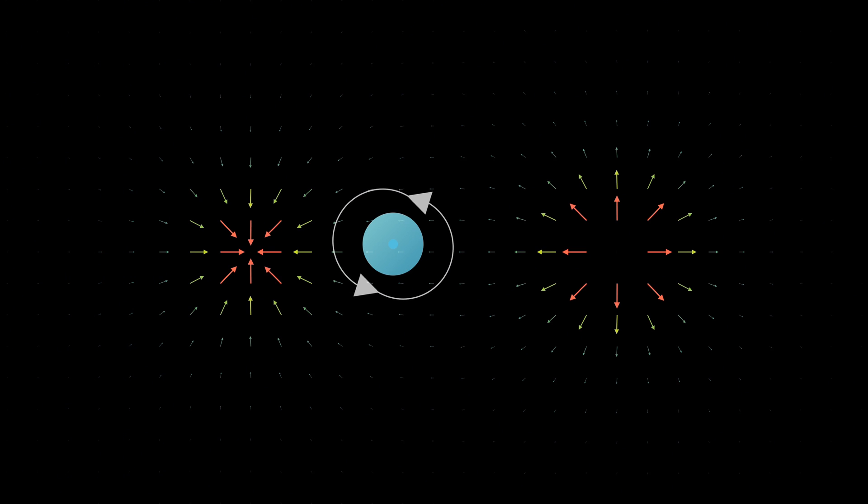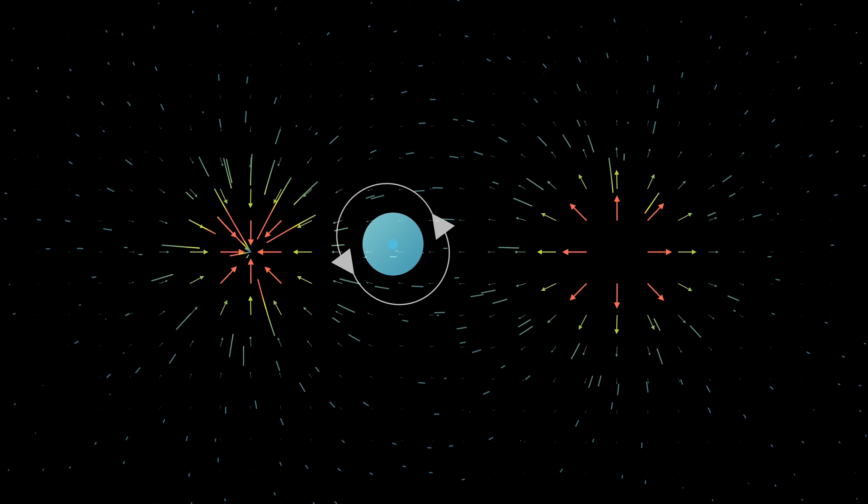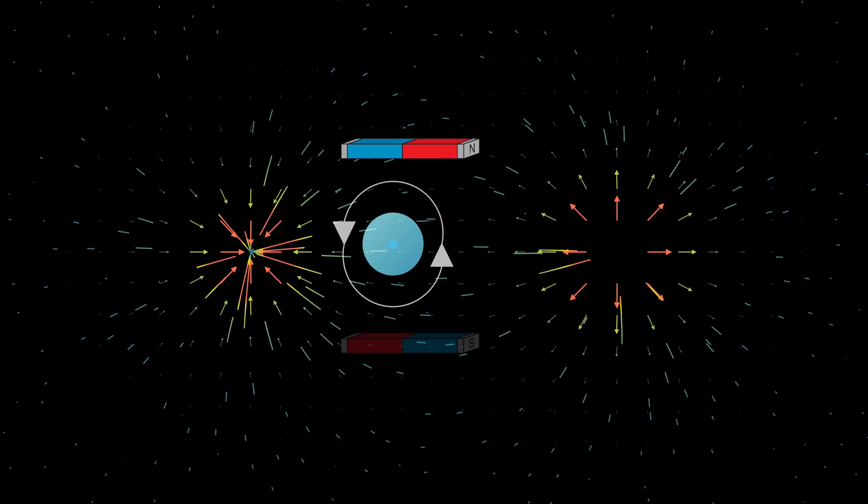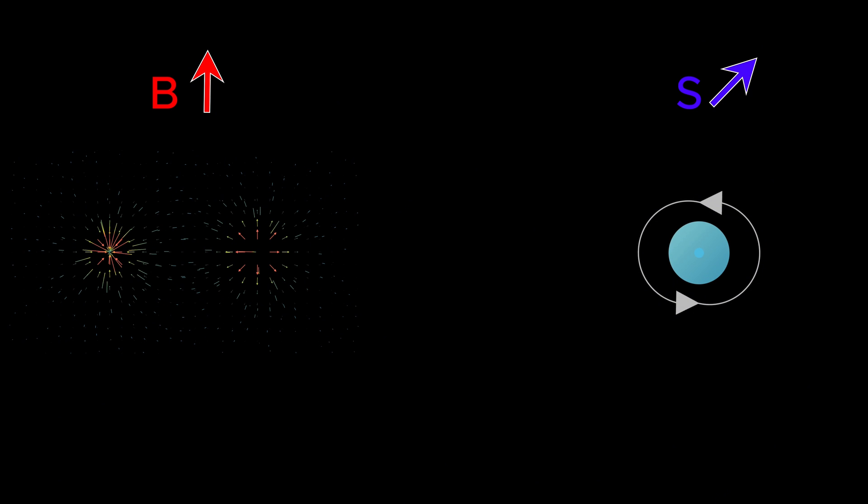Now let's introduce our particle into a magnetic field. When a particle with spin is placed in a magnetic field, the spin interacts with that field, just like a tiny magnet aligning or misaligning with it. This interaction energy is called the Zeeman-Hamiltonian, and it's simply the dot product between the spin vector and the magnetic field vector. Here, gamma is a constant that depends on the particle, and b vector is the magnetic field.